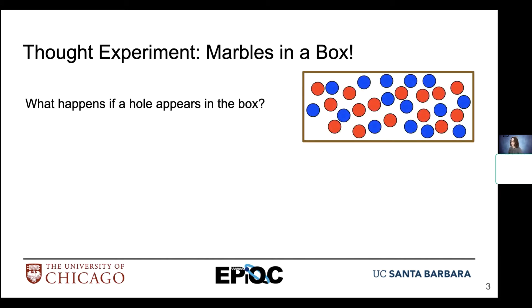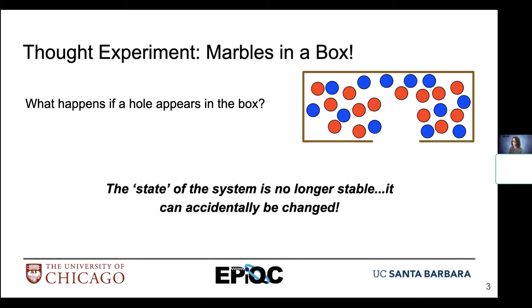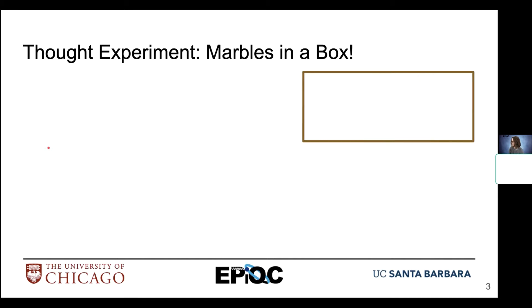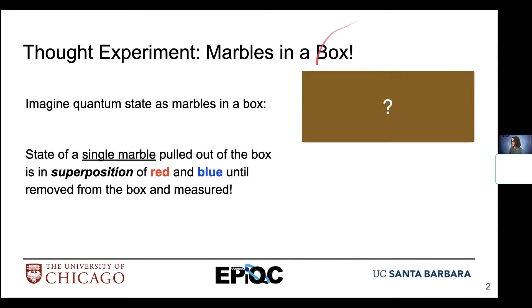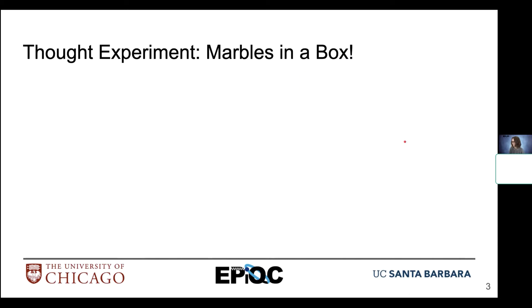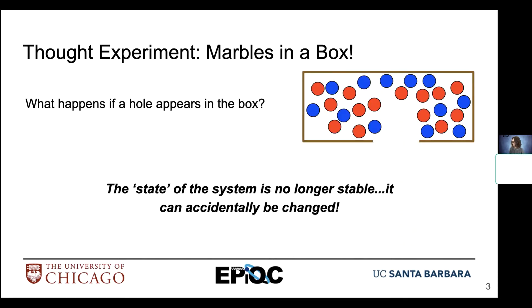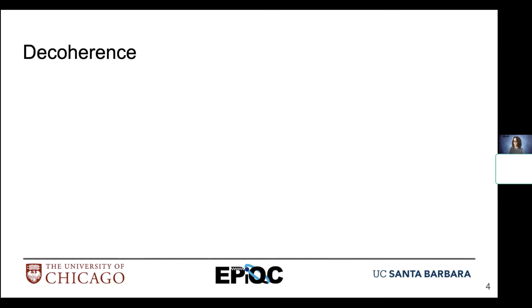Now let's think about another situation with the same experiment where we have marbles in a box, but this time a hole appears at the bottom of the box. Some marbles fall out — we don't exactly know what. If we were to view this as a system where we couldn't observe the inner components, we wouldn't know what changed about our system. If the hole appeared within the box, we wouldn't know how our probabilities shifted. In this case, the state of the system is no longer stable — it can accidentally be changed.